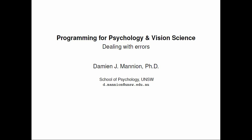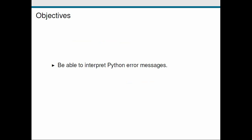Hi everybody and welcome to the next in this series of screencasts on programming for psychology and vision science. In this screencast we're going to be looking at how we can deal with errors. Our objectives are to be able to interpret the error messages that Python gives us when we make a mistake, and to look at some of the common types of error that we can make, how they arise, and how we can go about fixing them.